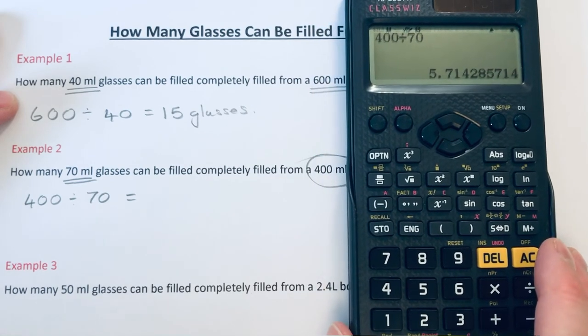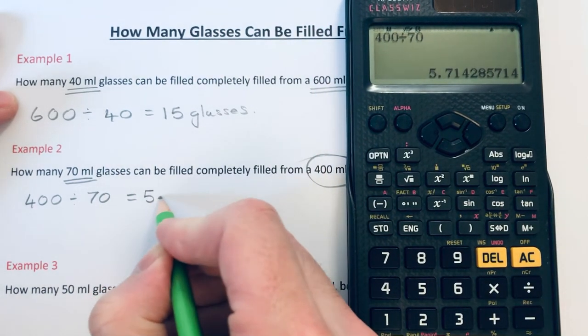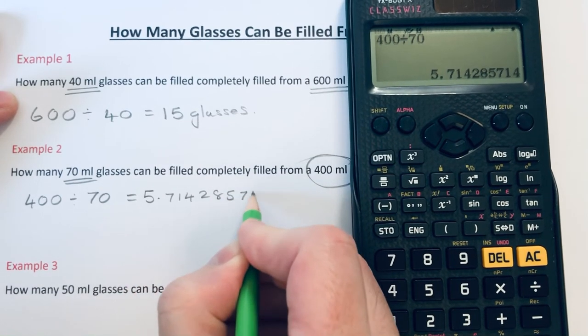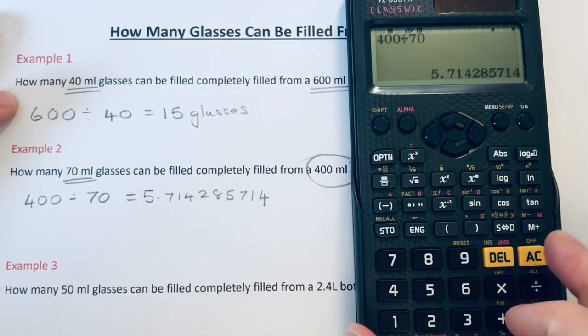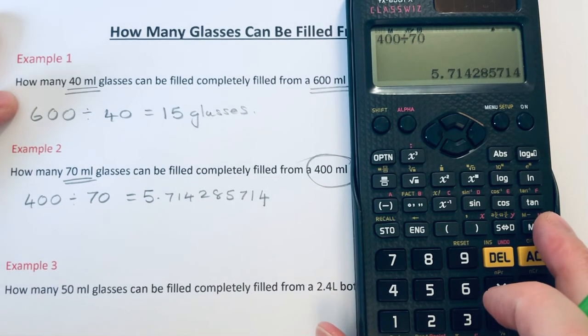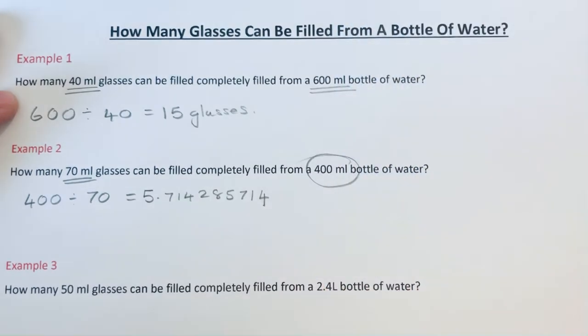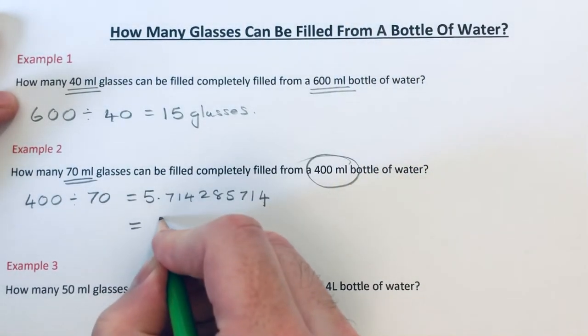This is coming out as a decimal. It wants the number of complete glasses, so we need to round the answer down to 5 glasses.